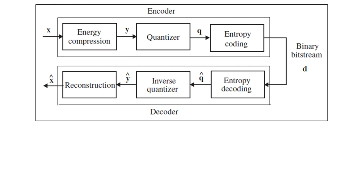To regenerate the original information from the coded form with good fidelity, there is a reverse procedure: decoding. The binary bitstream d is input to entropy decoding, resulting in signal q-hat. Then inverse quantization produces y-hat. Finally, reconstruction of the information gives x-hat. Practically, most of the time the reconstruction does not match the original one hundred percent, but it is similar to a high percentage — that is why it is represented as x-hat.